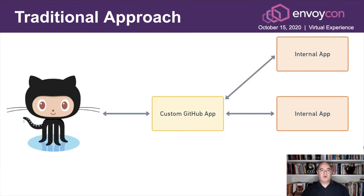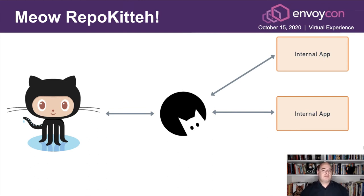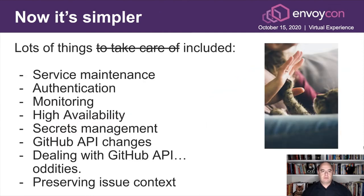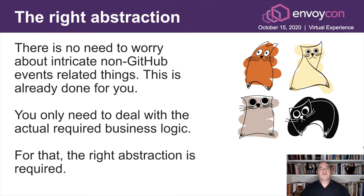So this is a traditional approach, and what I'm proposing here is RepoKitten. RepoKitten does most of the work for you. It's replacing your internal GitHub app or some other integration you're using. It is one product that takes care of most of the non-business-related issues. If previously you needed to maintain all this infrastructure, now you only need to care about the behavior that you need. This is done by formulating the right abstraction to have your business logic operate, so there is no need to worry about intricate GitHub event-related things like ordering or API oddities. You only need to deal with the required business logic.